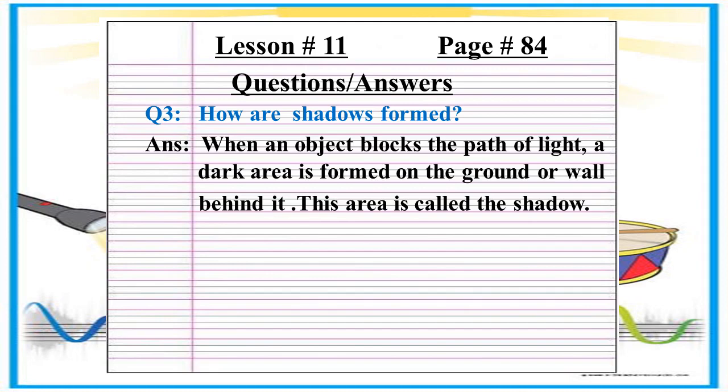Jab koi shay yani object roshni ka raasta rokti hai, zameen par ya deewar ke peeche ek dark area banta hai. Yeh area saya yani shadow kehlata hai.